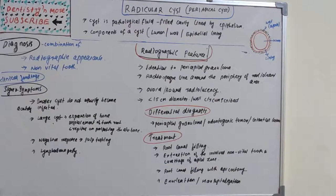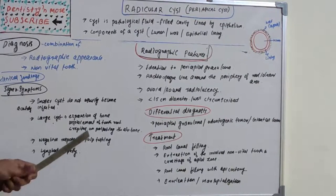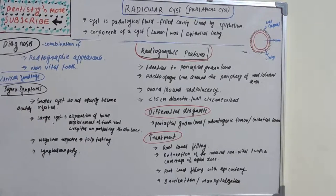How do we diagnose radicular cyst? We can use a combination of radiographs and vitality test. Mostly it will be a non-vital tooth, and radiographic appearance is the most conclusive evidence. In clinical findings, smaller cysts do not usually become acutely infected, but larger cysts show expansion of bone, displacement of tooth root, and crepitus on palpation of alveolar bone. Negative responses on pulp testing and regional lymph nodes will be affected.